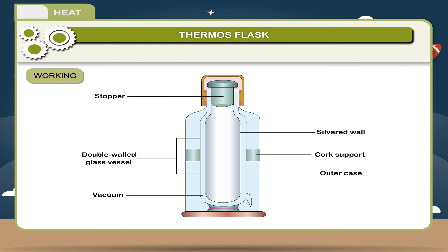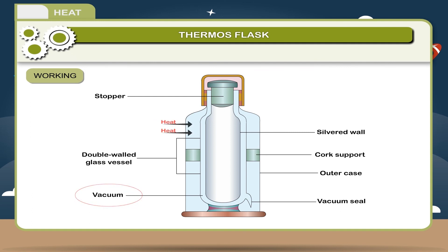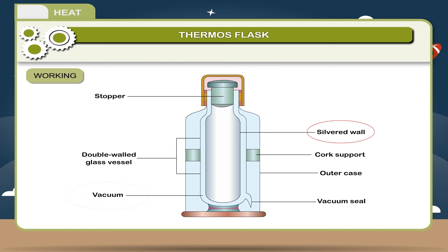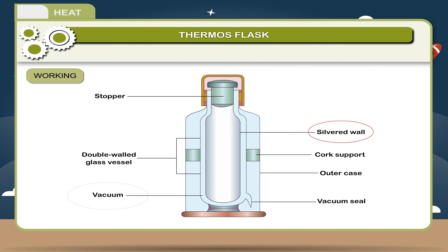Working of a thermos flask: the transfer of heat is minimized in these ways — (1) through vacuum, both conduction and convection are not possible as they require a medium; (2) the cork stopper prevents the transfer of heat by convection; (3) silvering of the vacuum tube minimizes the transfer of heat by radiation, because polished surfaces are both bad radiators and good reflectors of heat.